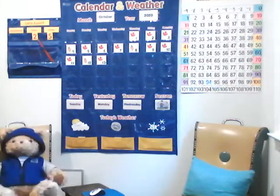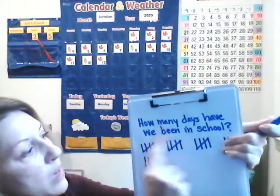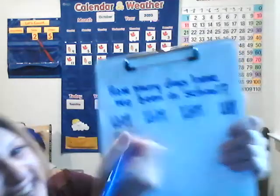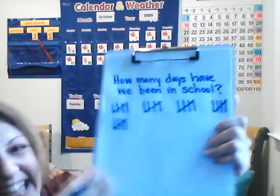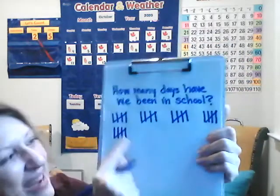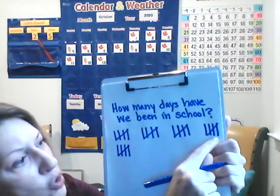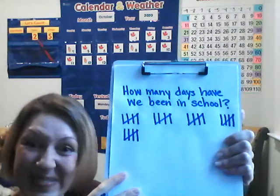Let's go ahead and write the date. Before we write the date, we get to cross the tally marks — it's my favorite part. How many days have we been in school? You ready to cross the five? Remember we do this in a diagonal. Count with me: 5, 10, 15, 20, 25 — 25 days! Can you believe it?